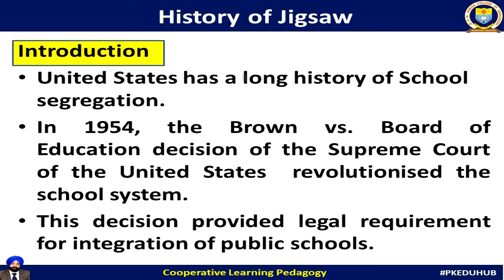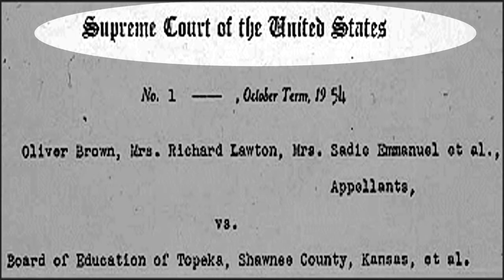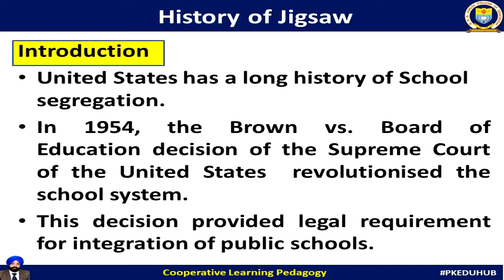As you all know, the United States has a long history of school segregation. In 1954, the Brown versus Board of Education decision of the Supreme Court of the United States revolutionized the school system. It declared that segregation is unconstitutional, and this decision provided legal requirements for the integration of public schools.